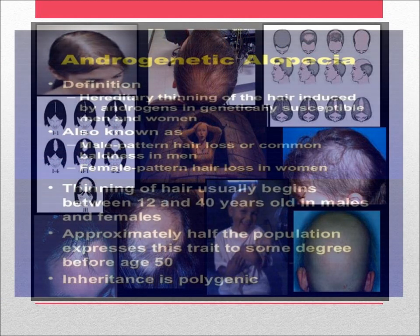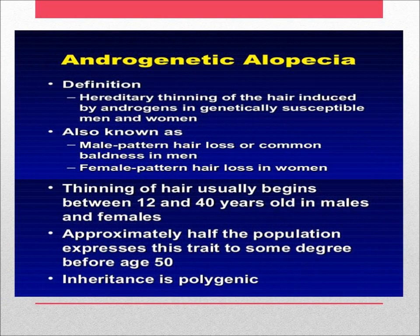Androgenetic alopecia is the hereditary thinning of hair induced by androgens in genetically susceptible men and women, also known as male pattern hair loss or common baldness in men, and female pattern hair loss in women. Thinning of hair usually begins between 12 and 40 years old. Approximately half the population expresses this trait to some degree before age 50. Inheritance is polygenic.